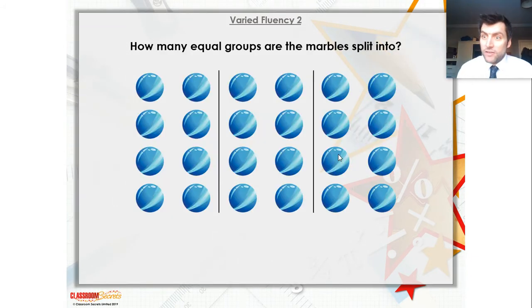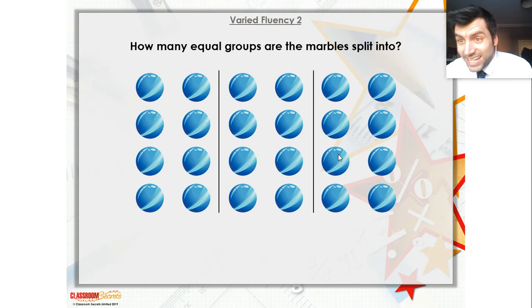Let's have a look now. Some marbles here. I've been playing outside because it's not snowy anymore. I've got how many marbles in total? Well, I'll count them. 1, 2, 3, 4, 5, 6, 7, 8, 9, 10, 11, 12, 13, 14, 15, 16, 17, 18, 19, 20, 21, 22, 23, 24. I've got 24 marbles.